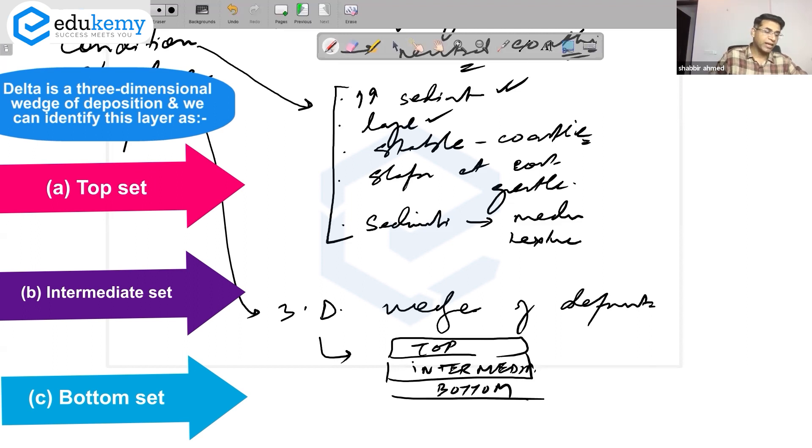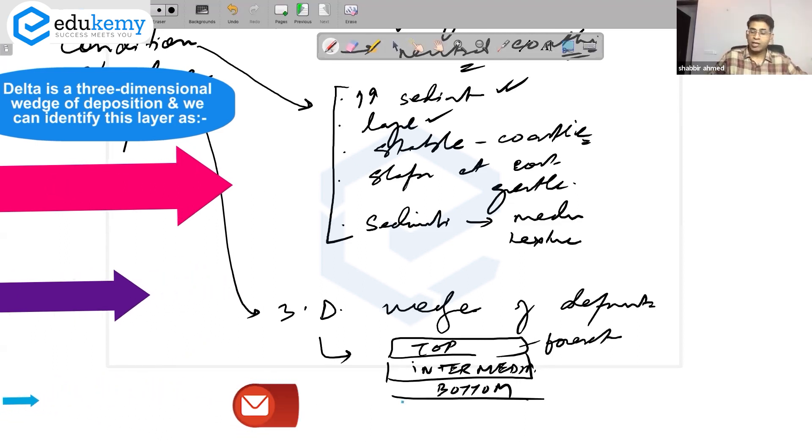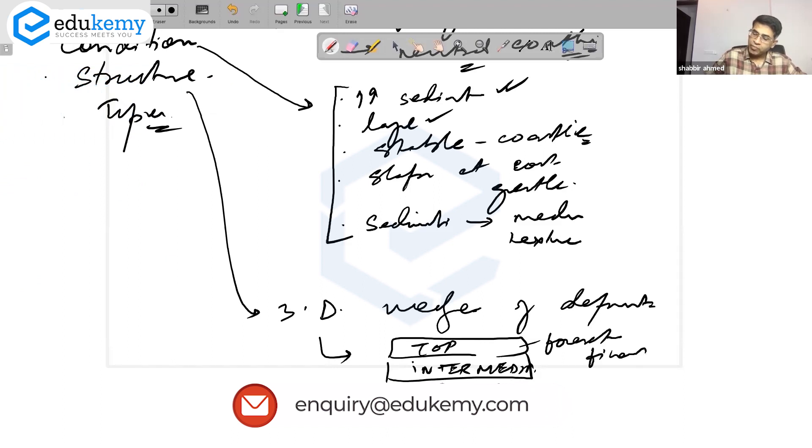There is a top set, an intermediate set, and a bottom set. The top set is also called the foreset. The top set has the finest sediments, and the bottom set has relatively coarser sediments.